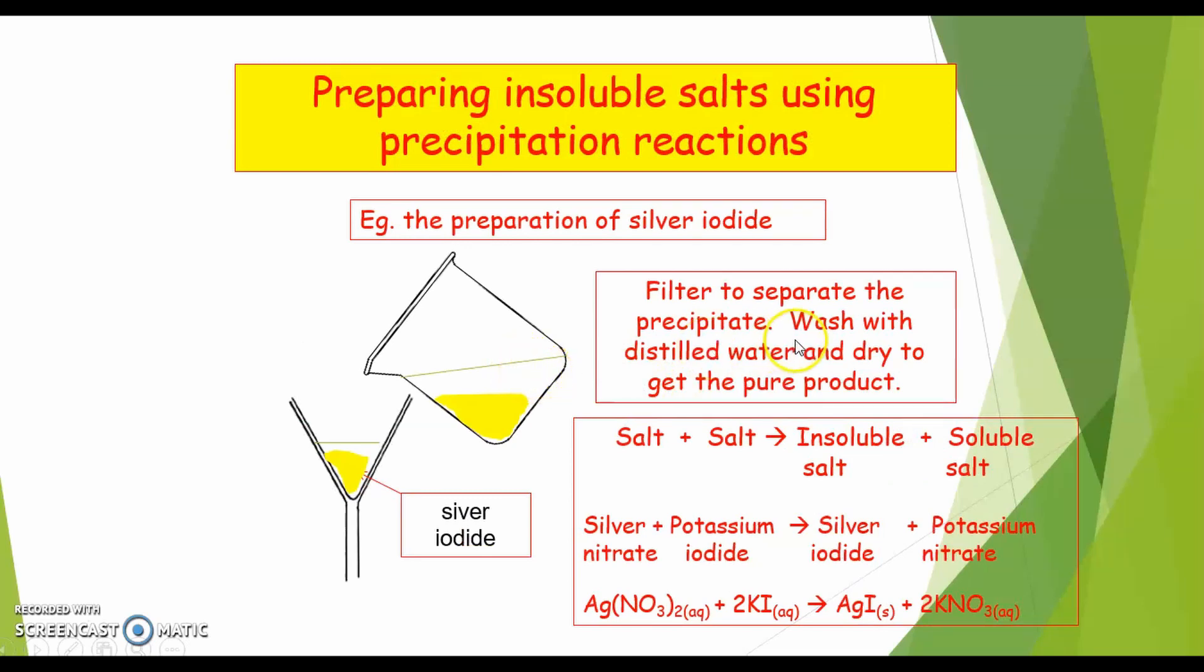After filtering the precipitate, we wash it with distilled water to ensure that all potassium nitrate is removed from the silver iodide. Next, we dry the residue between filter papers to obtain the pure product of silver iodide.